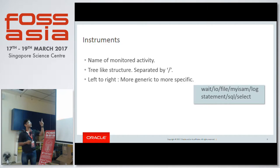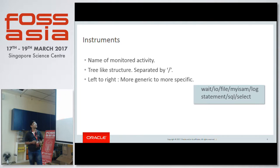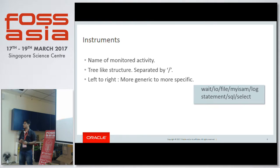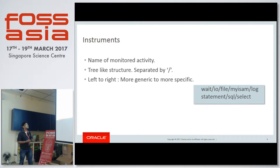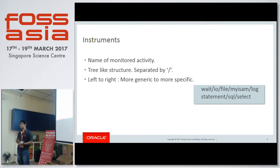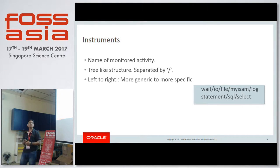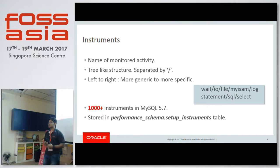For example, the instrument wait/IO/file/MyISAM/log — the first part says this is a wait instrument, then IO wait, then IO on file, and specifically the MyISAM log file. Another instrument is statement/SQL/select — more generic is statement, then SQL statement, then specifically select. So this uniquely identifies the select activity. In MySQL 5.7 we have 1000+ instruments, and all of them are listed in a table called setup_instruments.